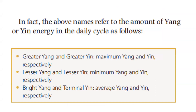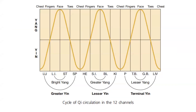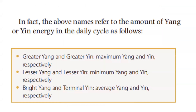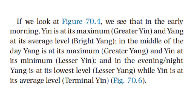Here is another illustration of the cycle of Qi circulation in the 12 channels. The above names refer to the amount of yang or yin energy in the daily cycle as follows: greater yang and greater yin pertain to maximum yang and yin respectively; lesser yang and lesser yin pertain to minimum yang and yin respectively; brighter yang and terminal yin pertain to average yang and yin respectively. In the early morning, yin is at its maximum — greater yin — and yang is at its average level, which is the bright yang.